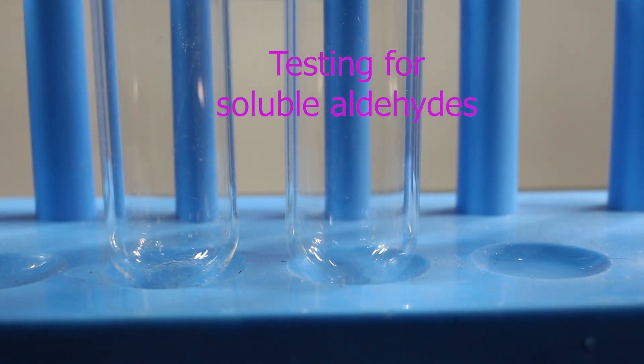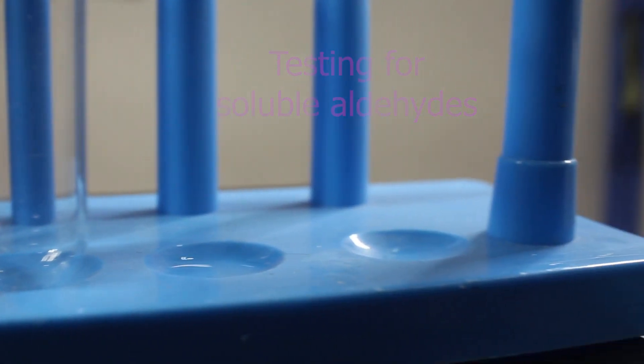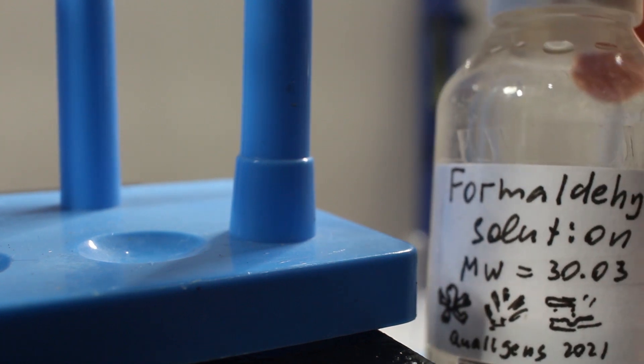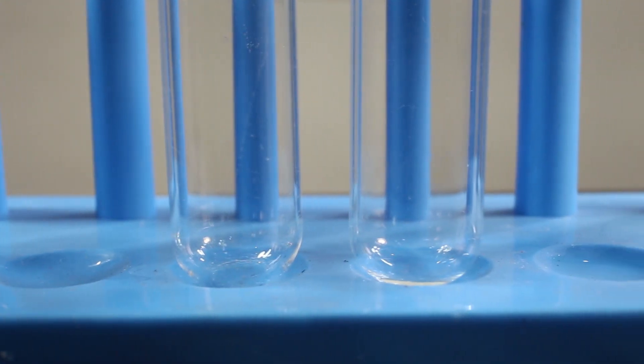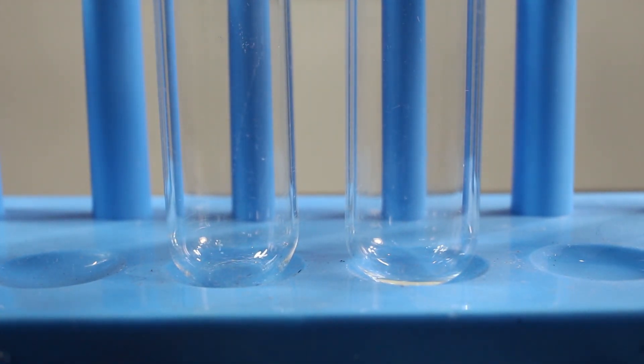Schiff's reagent should give a clear coloration on addition and we use aldehyde, formaldehyde on the right, which is supposed to give us a positive test, and on the left we would use a control acetone, which is also a carbonyl compound, but it's not an aldehyde, supposed to give a negative result.